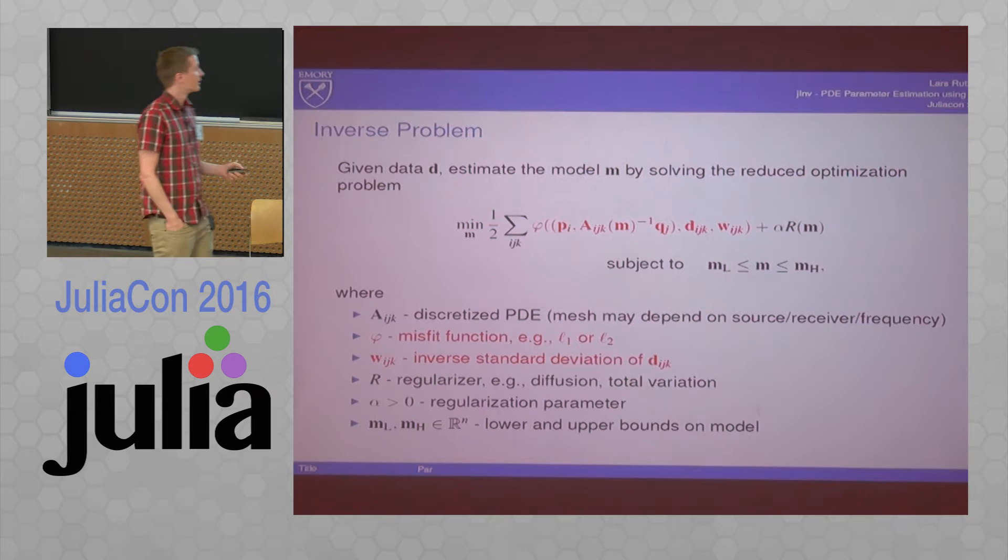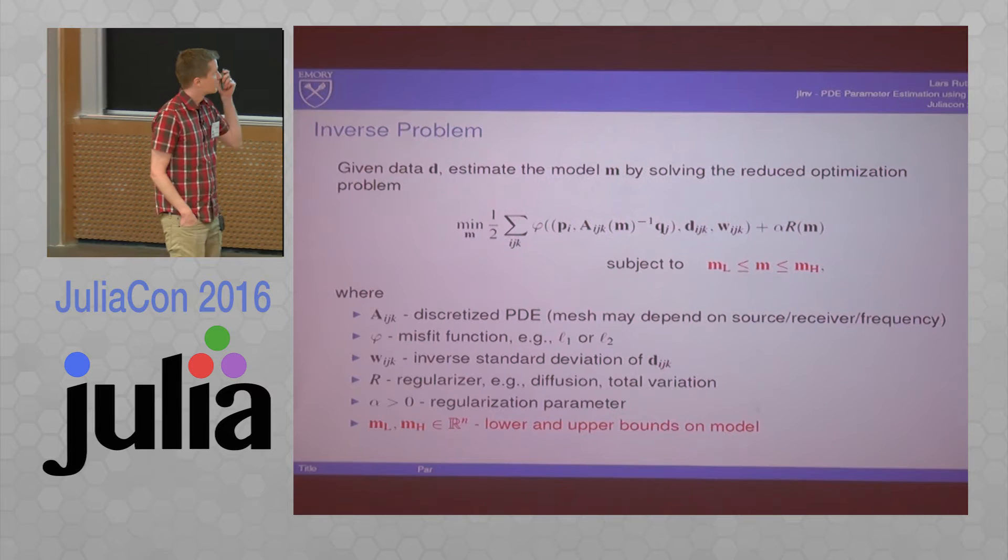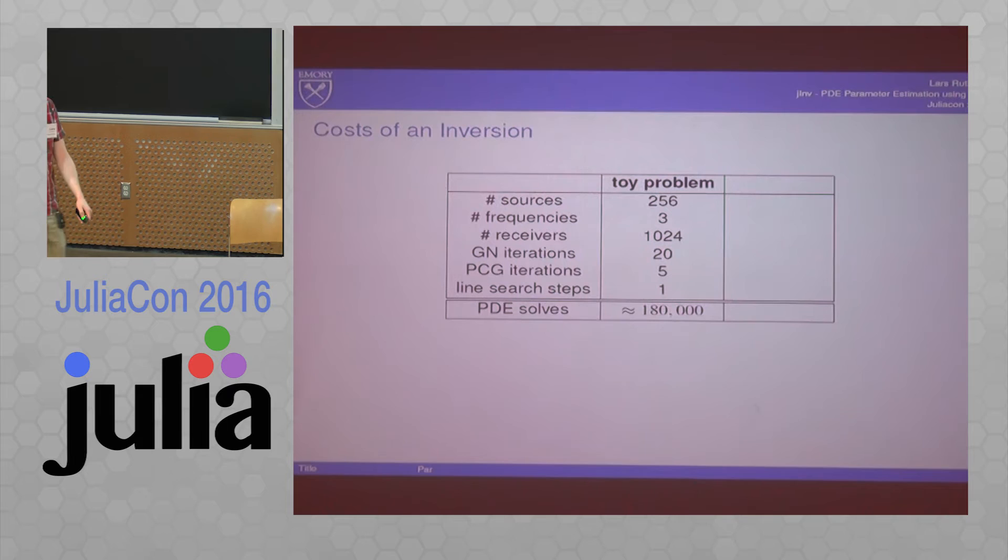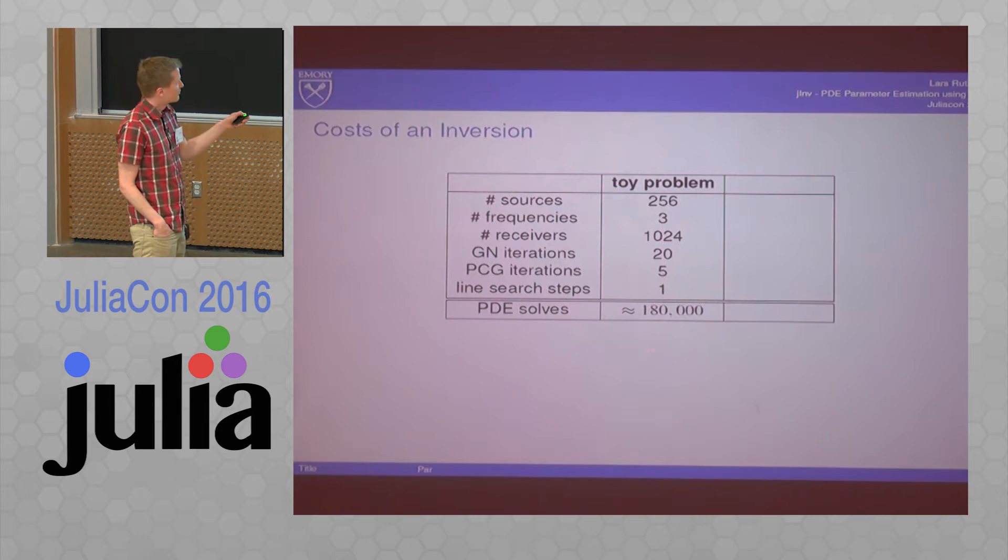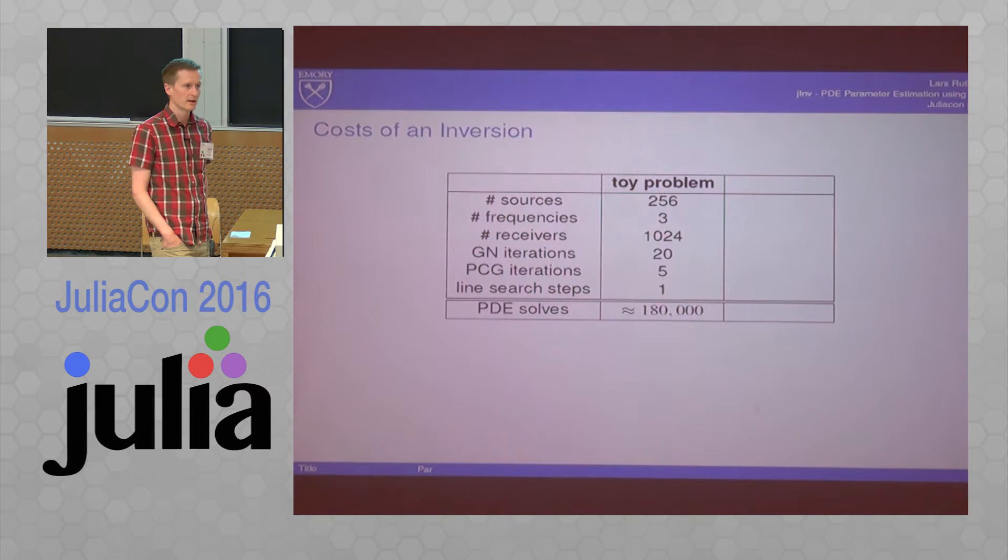We have tons of options how to compare the data and what to do with regularization. We have bound constraints too. Just to give you an estimate, for a toy problem where you have like 256 sources, three frequencies or so, an inversion usually costs you 180K PDE solves until you get a solution, a reasonable image. That's a toy problem. For a real problem, there is a 10 to the 11 here.